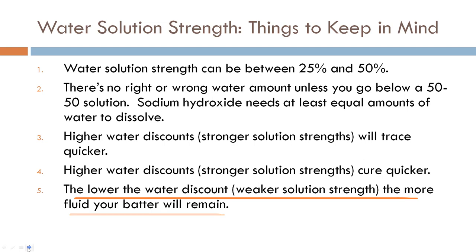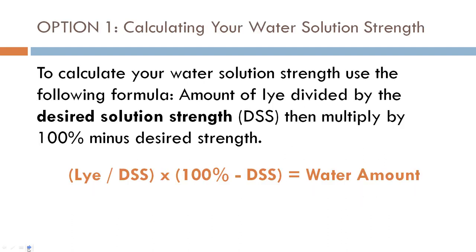Higher water discounts or a stronger solution strength will also cure quicker because there's less water, so the soap will be ready faster. The lower the water discount, or the weaker your solution strength, the more fluid your batter will remain. When you want to do really complicated designs that need a lot of time, having more water helps because your batter won't get thick as quickly, allowing you to complete those intricate designs.